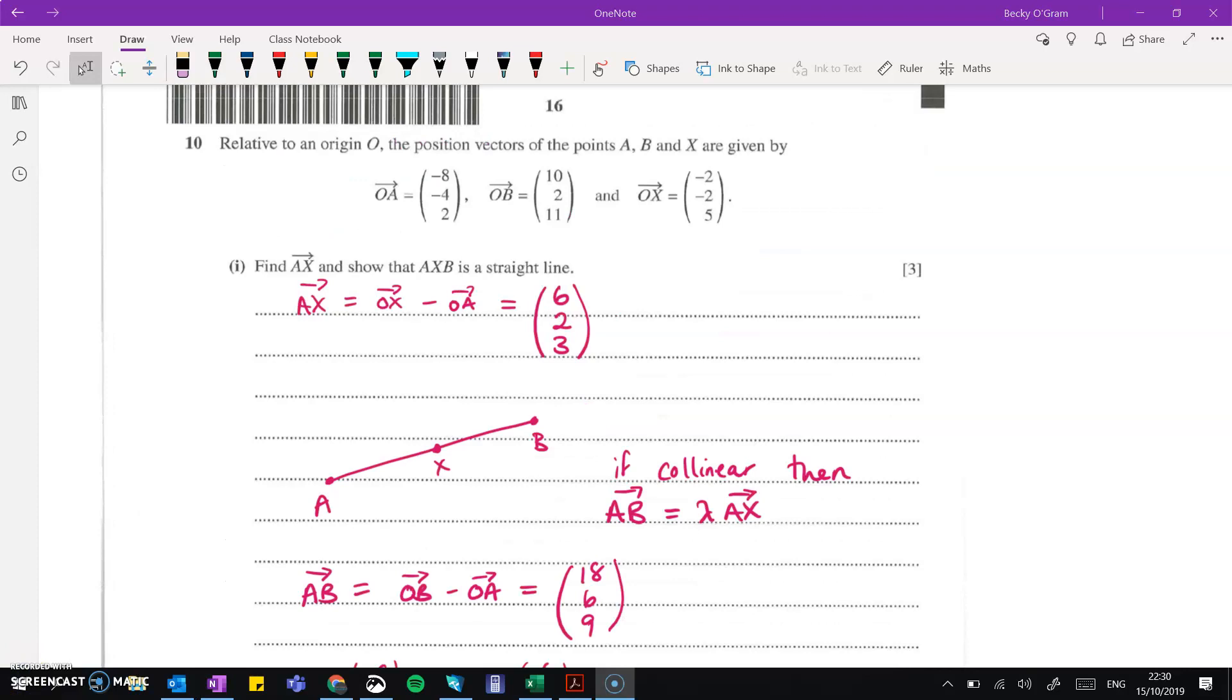Now question 10 is our vectors question, and I think it's quite a nice vectors question, this one. Fairly straightforward. So find a of x first of all. That's just regular vector stuff. Show that a, x, and b is a straight line.